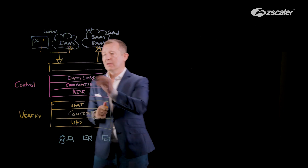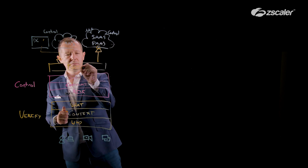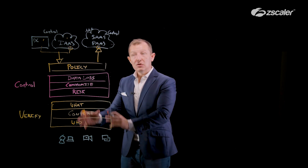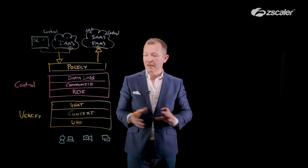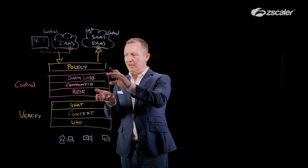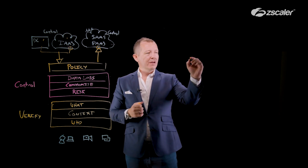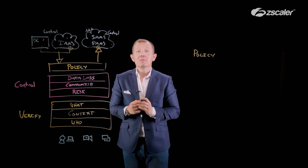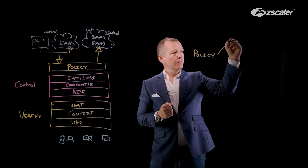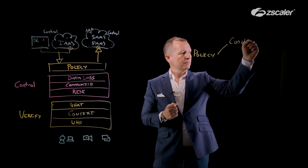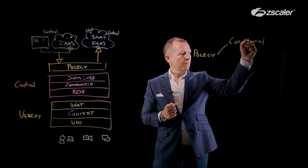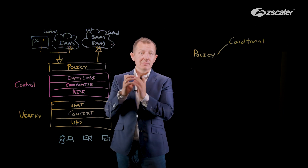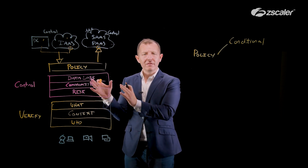Policy really comes down to the idea of how we get these initiators to their destination applications with the right controls in place, based upon that initiator, the control phase, and now we're going to enforce it. But policy for us is not as simple as a yes or no. In our world, we see policy as being conditional — not simply allow or block, because that is very binary and very simple.